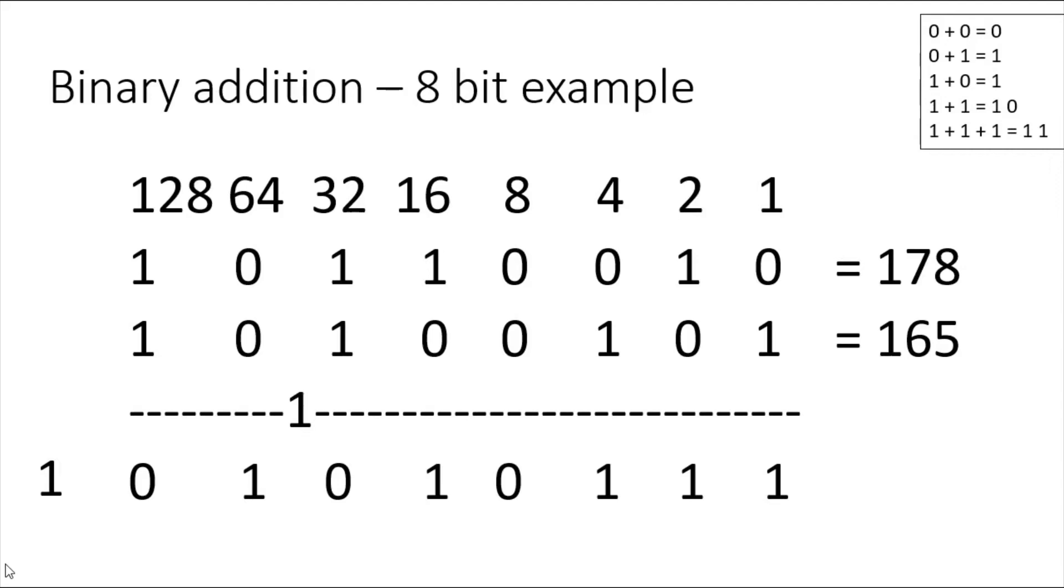So 178 plus 165 is 343, which I've got there: 256 plus 64 plus 16 plus 4 plus 2 plus 1 is 343. That's gone beyond 255, which is the maximum number I can have in 8 bits. So now I've got an overflow going into the ninth bit, giving me an overflow here.